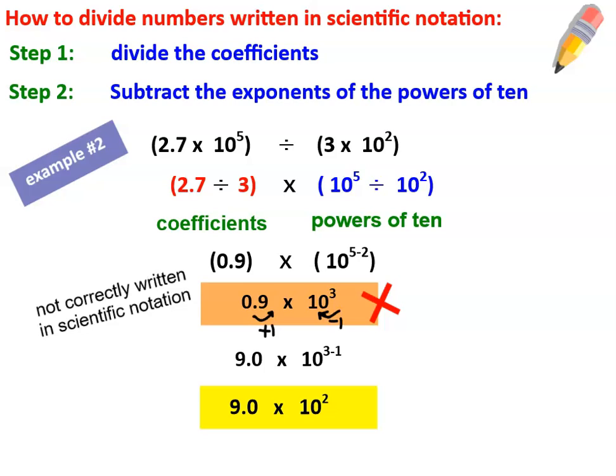Alright, here's an example where the final answer has a coefficient that's too small. So we move the decimal one place right and then we move the exponent one place left. Pause the video and take a good look at this example.